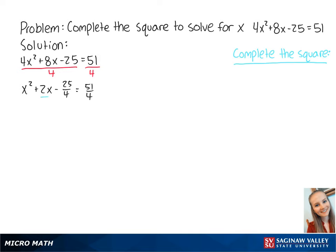To complete the square, we take the coefficient of x and multiply it by 1/2. So we get 2 times 1/2 equals 1. Then we take 1 and we square it, which equals 1.